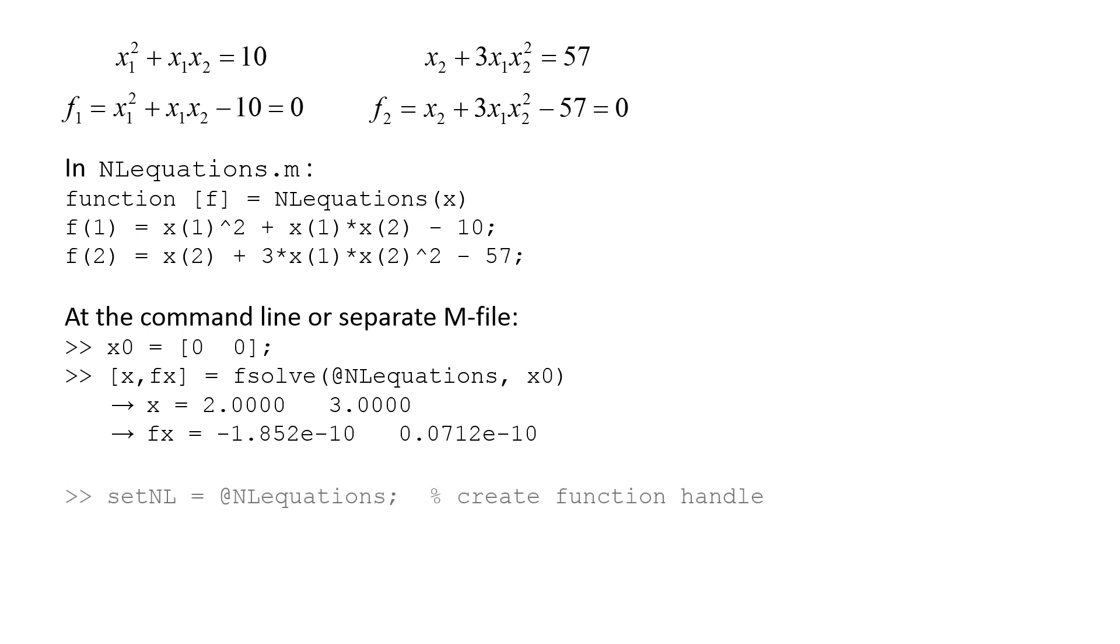Another option when invoking fsolve is to create a function handle for the m-file. The function handle can be anything you wish, but we will use the name setNL because we have a set of nonlinear equations. We type setNL equals at nlequations, followed by x equals fsolve open parenthesis setNL comma x0 close parenthesis. Omitting fx results in just the solution being stored in vector x.